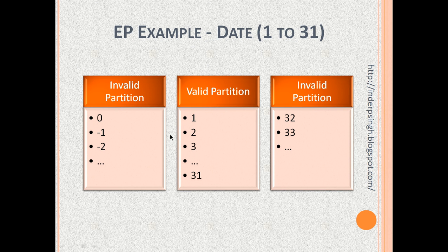Let us say there is a date field and you have to enter values between 1 and 31. Here we can see there are three partitions. The first is the invalid partition: 0 and all negative integers — minus 1, minus 2, minus 3, and so on. Then we have the valid partition with values from 1 through 31. Then we have the second invalid partition which is 32, 33, 34, and so on. Equivalence Partitioning means we pick exactly one value from each partition.